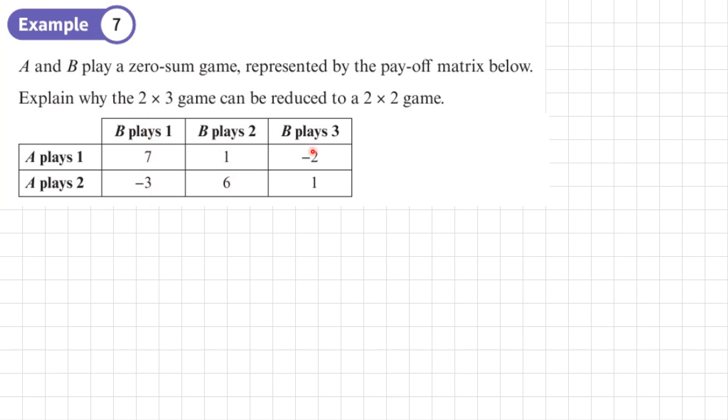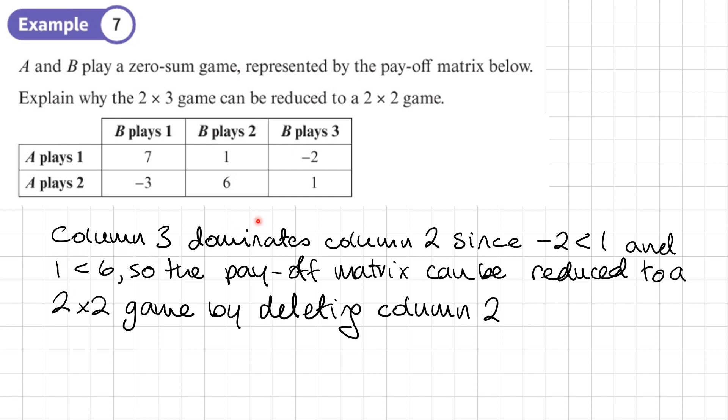So we're looking for one column that dominates another. Now remember, when we're looking for dominance in columns, we're looking for entries in that column which are smaller or lower than entries in another column. Now I can see that negative 2 is less than 1 and 1 is less than 6. So column 3 dominates column 2. So column 3, that's this column here, dominates column 2 since negative 2 is less than 1 and 1 is less than 6. So all the corresponding values must be less when we're looking at trying to reduce columns. So the payoff matrix can be reduced to a 2×2 game by deleting column 2.